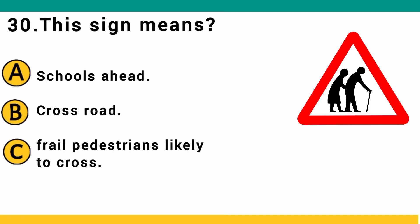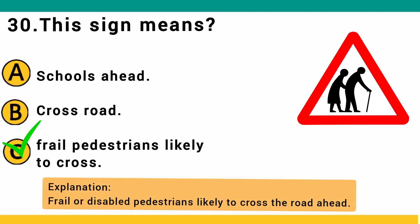This sign means: A) schools ahead, B) crossroad, or C) frail pedestrians likely to cross. The correct answer is C: frail pedestrians likely to cross. Frail or disabled pedestrians are likely to cross the road ahead.